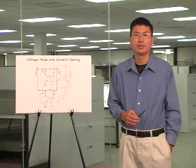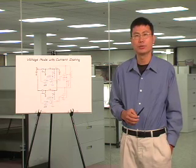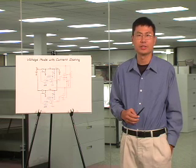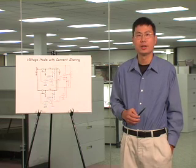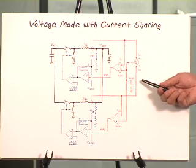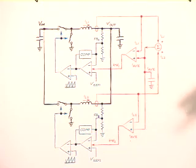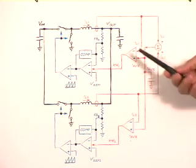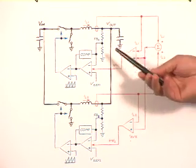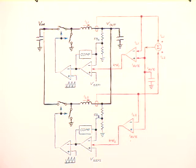In high-current applications where many channels need to be placed in parallel, it is important to have good current sharing among channels to balance the thermal stress and avoid inductor saturation. Unfortunately, with voltage mode control, a fairly complicated current sensing network and current sharing network are required. Besides, the external current sharing network has to be slower than the internal voltage feedback network, otherwise the loop will become unstable.